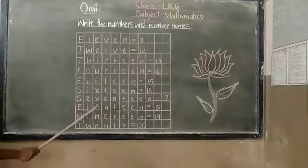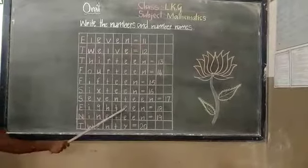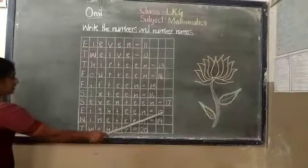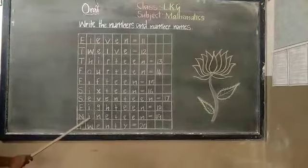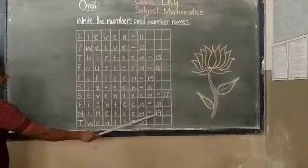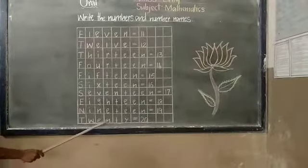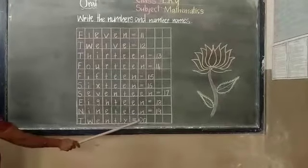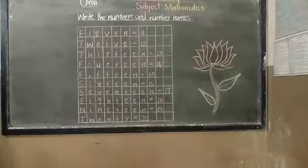E-I-G-H-T-E-E-N 18, N-I-N-E-T-E-E-N 19, T-W-E-N-T-Y 20. Very good children.